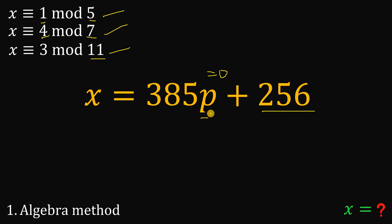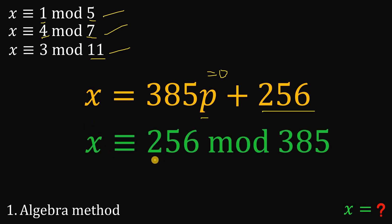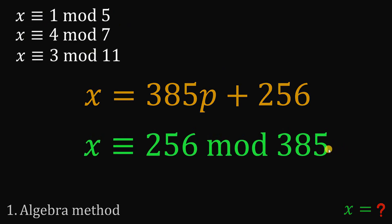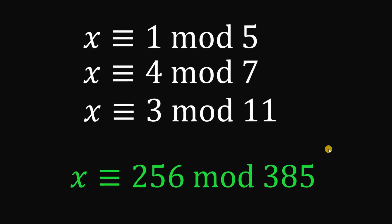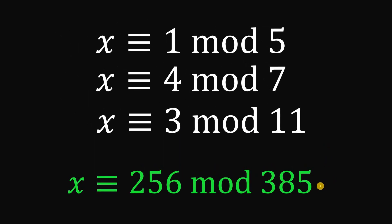There are many possible values of x — if you let p equal 1, p equal 2, and so on and so forth. We can rewrite this in congruence format: x is congruent to 256 mod 385. And this is our answer using the algebra approach.